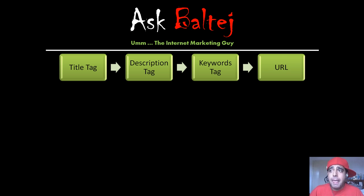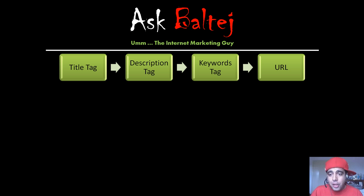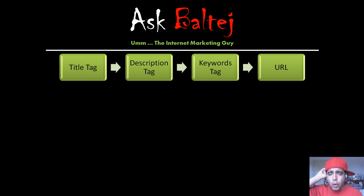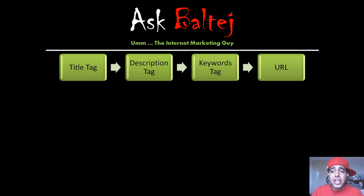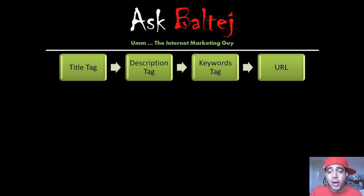Next is your domain name, your URL. If I had the domain name lawyerintoronto.com, without even going to my website, it's already telling everybody what I do. It's very important if you could get your keyword phrase inside your domain name. The problem is most domain names are already taken. If you already have a branded name, there are other ways — for example, it could be www.baltaj.com/lawyerintoronto, and now you have your keyword phrase as part of your URL.